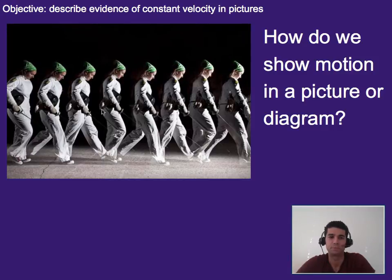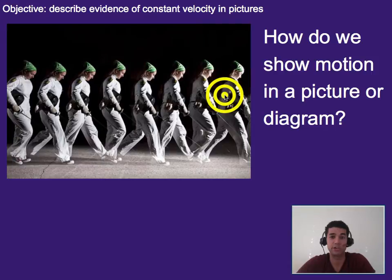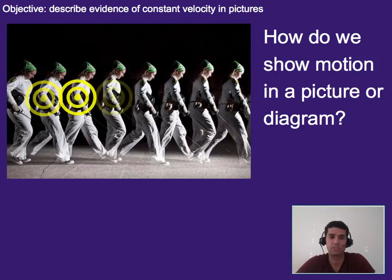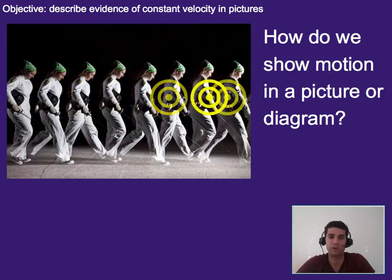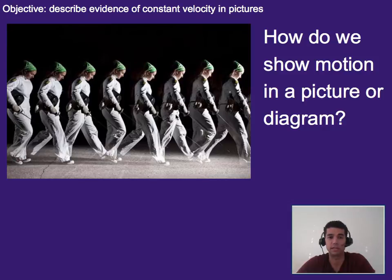How do we show motion in general? Well, we've got a picture here of a woman walking, and this is a good example. While this is a single picture, we can see that there are multiple snapshots of this person as we go through the picture from left to right. As a result, we can see what her motion looks like.